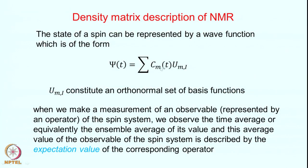Let us begin by looking at the wave function of a spin system. In quantum mechanics, you describe a spin system by a wave function, which is a vector with an amplitude and a phase. Almost invariably, wave functions are described in quantum mechanics as a superposition of various individual eigenstates of the spin system. Here, ψ(t) is described as a superposition of various individual eigenstates, and for the spin states of a nucleus with spin i, the azimuthal quantum number m gives 2i+1 eigenstates.